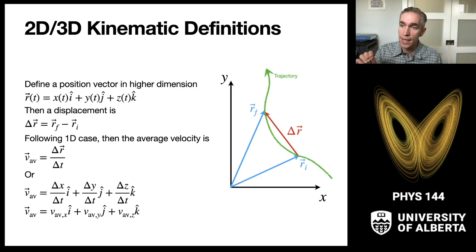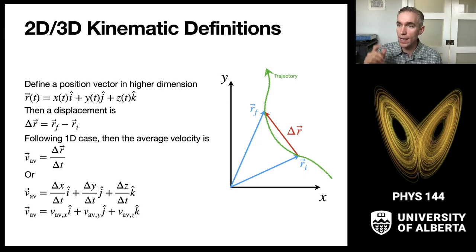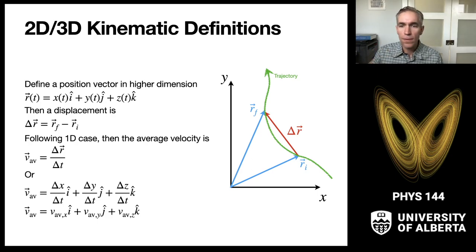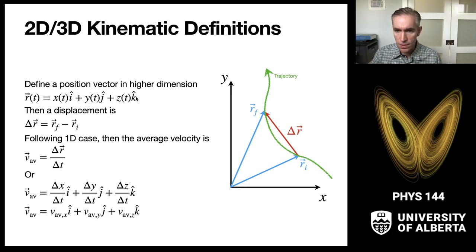The i, j, and k directions define an orthogonal set of coordinates, and the motion of the particle is moving around as a function of time in the x direction, independent from the y and independent from the z direction. We have a vector r, which is the position of a particle, and it's some function of x, y, and z in up to three dimensions.